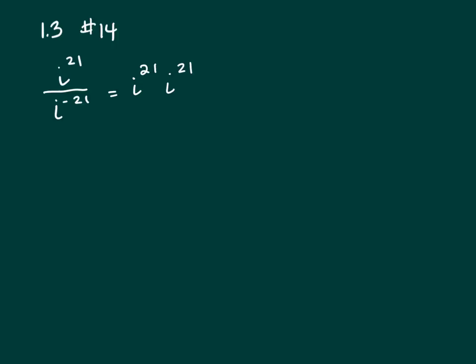So now we're multiplying like bases, so we add our exponents. So that's going to be i to the 42.